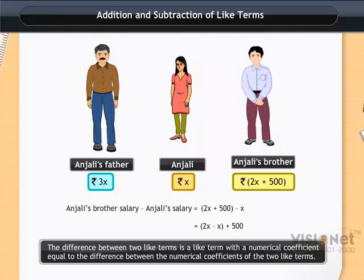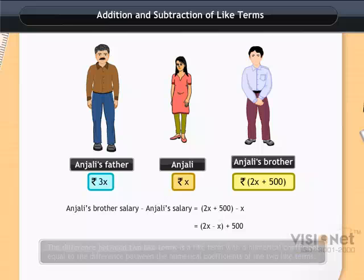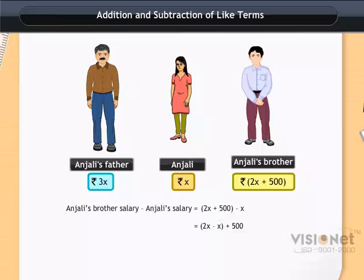Thus, the difference between two like terms is a like term with a numerical coefficient equal to the difference between the numerical coefficients of the two like terms. Again, we group the like terms together. We get 2x minus x plus 500. Taking x common and subtracting the numerical coefficients, we get the difference in the salaries as x plus 500.